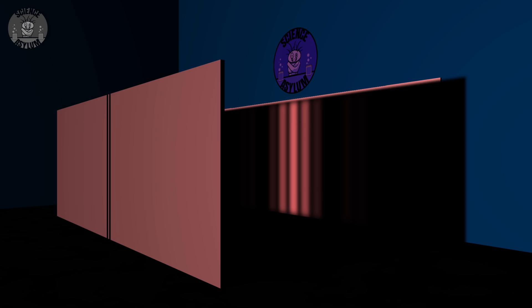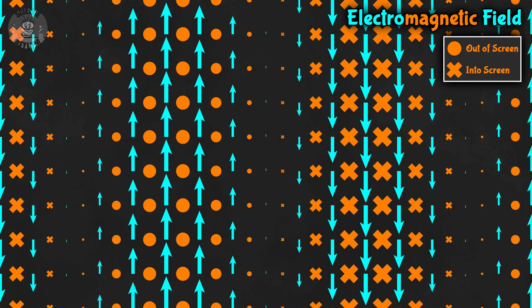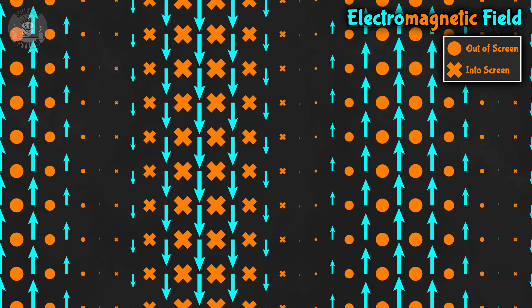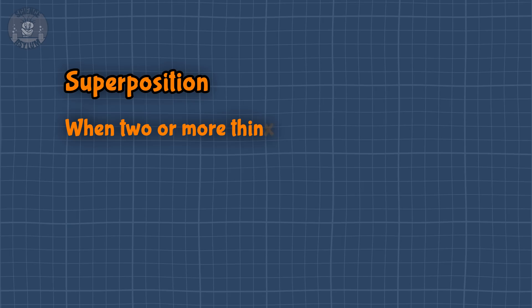Interference is what happens when two waves overlap and combine. Light is a wave in the electromagnetic field. But what about photons? I said shush! Light is a wave in the electromagnetic field, but there's only one electromagnetic field. It can only respond to the sum of everything that's happening to it. That's what we call superposition. Superposition is when two or more things cause a net response that's just the sum of the responses that would have been caused by each thing individually.